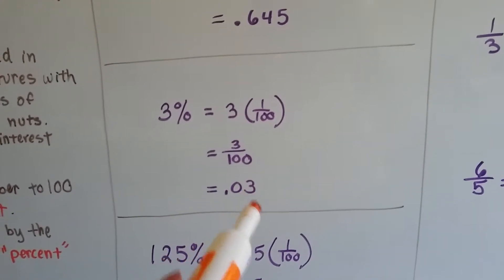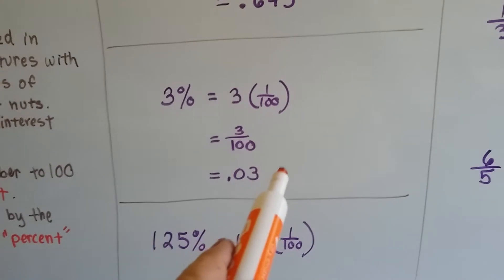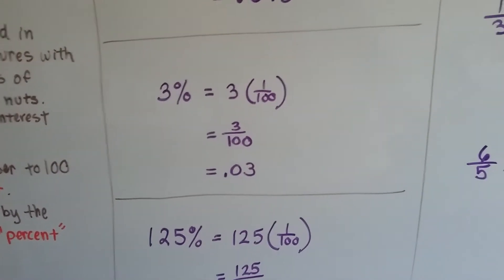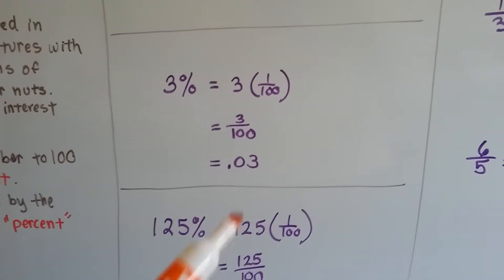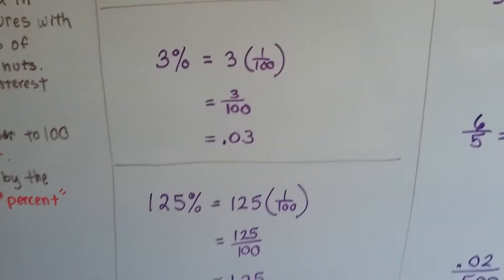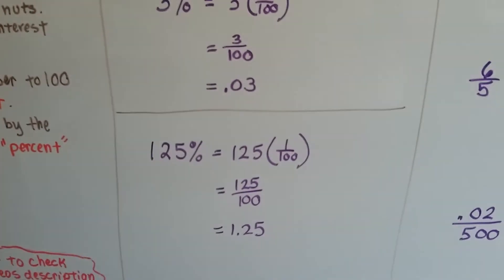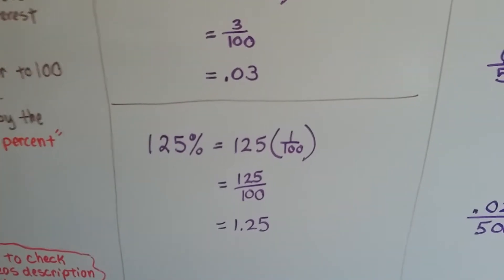Tenths place, hundredths place. And if it goes into thousands, that can happen. But a lot of times when we're doing math, we'll round it off to the hundredths place. And then you have to use an approximate symbol, because then it's not exactly equal.